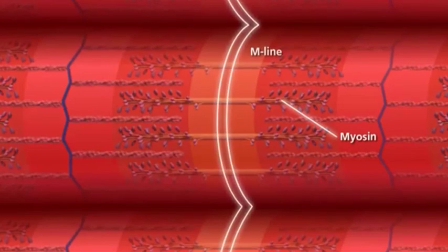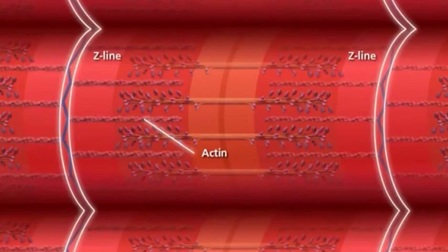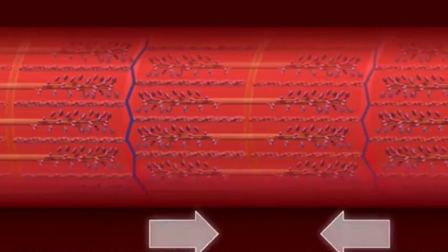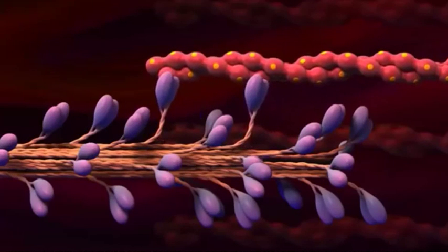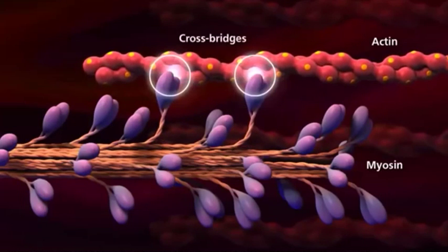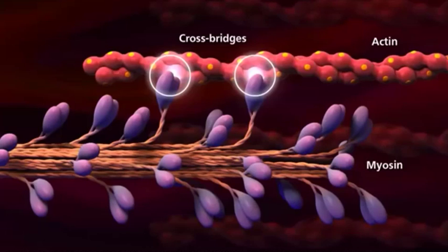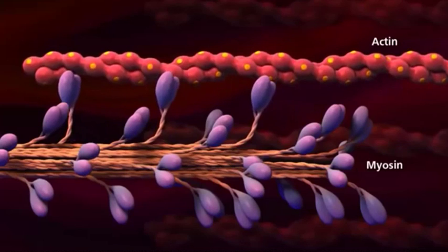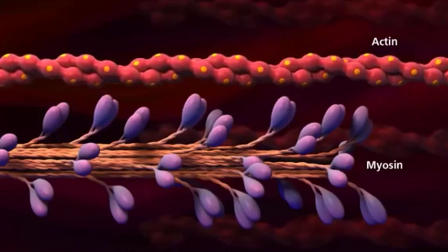When you look at an individual sarcomere, they're composed of thick and thin filaments, and this is what makes our muscle look striated. The thick one is called myosin, connected to the centre of the sarcomere on the M line. The thin strand is called actin, connected to the edge of the sarcomere on the Z line. These filaments slide past each other to shorten the sarcomere unit and shorten the entire muscle fibre.